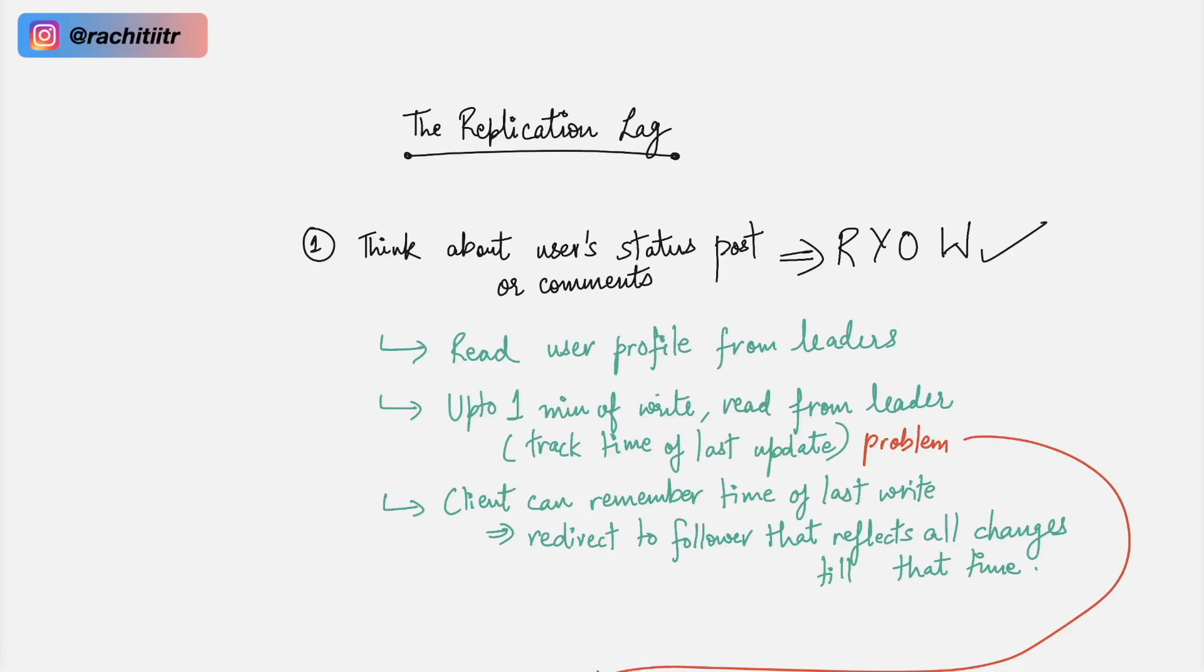There are many other scenarios which you can imagine in which this can go wrong. To fix such scenarios we can implement a strategy which is known as read your own writes, which is RYOW. So talking about our comment scenario in which user is commenting on something and then getting the idea that their comment was lost, it would mean that you are fetching all the comments from some replica but you are also fetching your own writes. So every user will fetch their own writes so that they get the momentary confirmation that their write is replicated and it's in perfect sync.